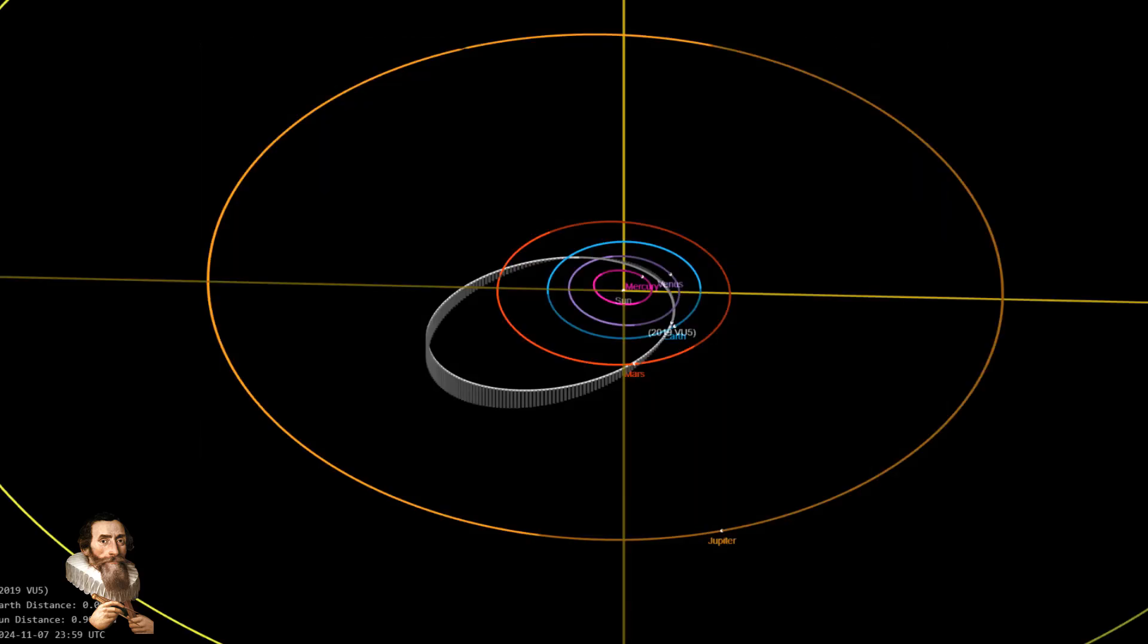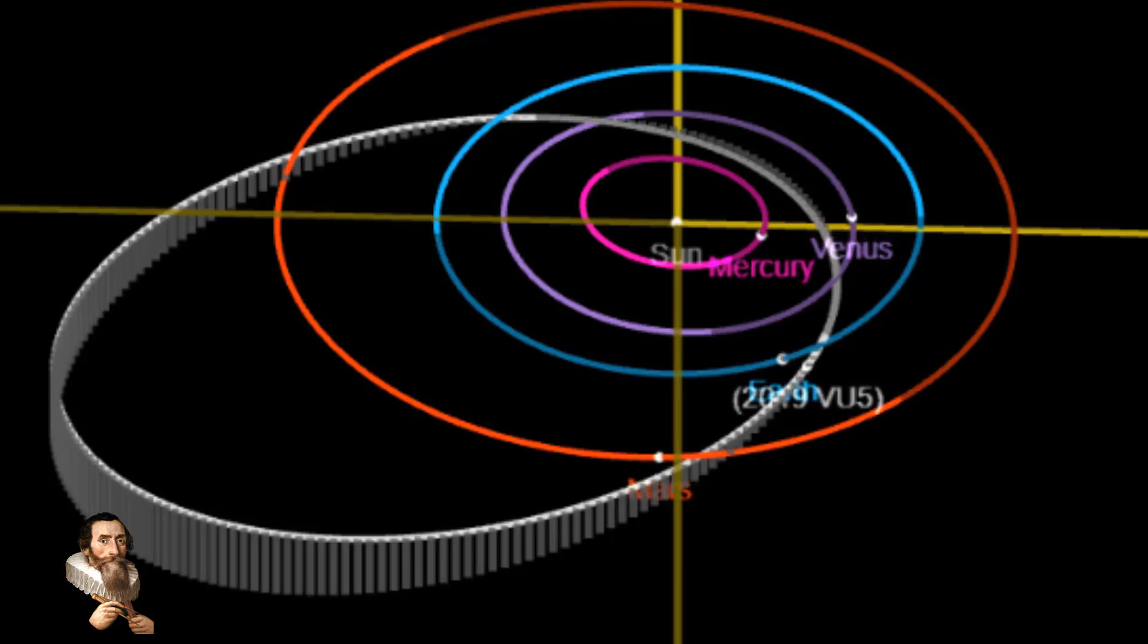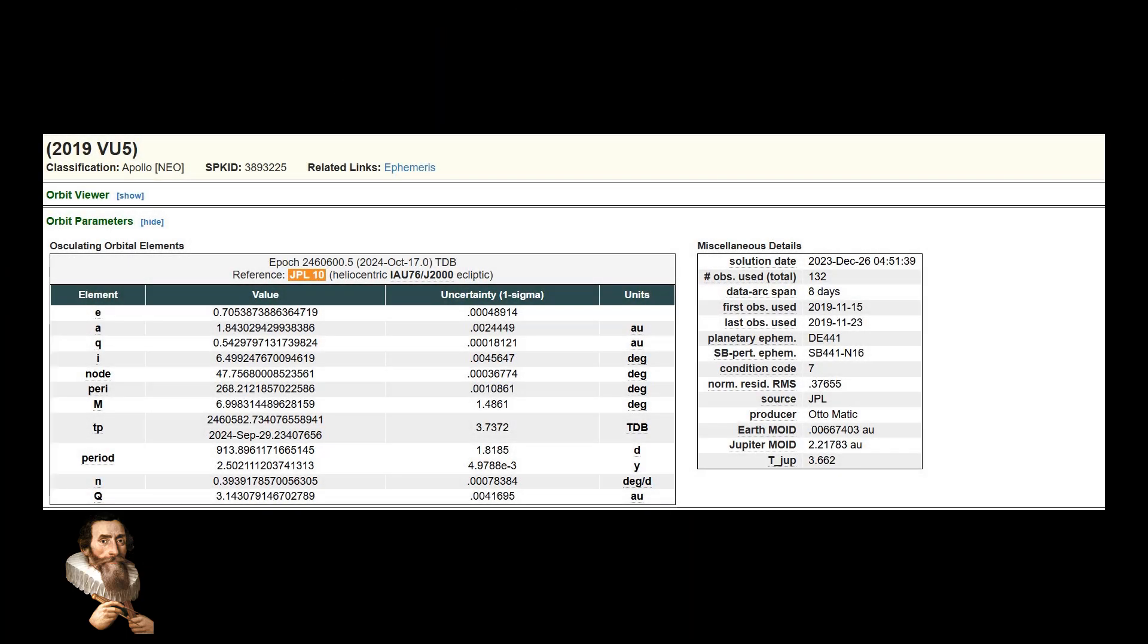Asteroid 2019 VU5 will, according to NASA, skim our world at a distance of over 3 million miles tonight, Friday the 15th of November, but it has zero chances of doing anything to our planet at all.